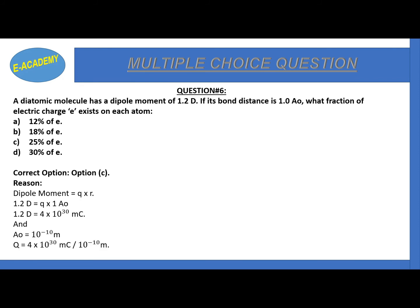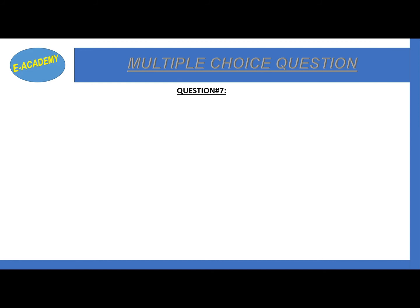When we convert it, we have 1.2 D is 4 times 10 raised to power -30 coulomb meter. Dividing by 10 raised to power -10 meter, we get 0.25, and when we multiply it with 100, this will become 25 percent.